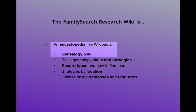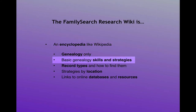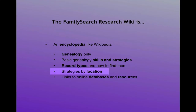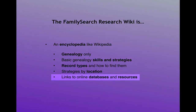The FamilySearch Research Wiki is an encyclopedia, just like Wikipedia, except that all of the articles are about genealogy. Here, you will learn basic genealogy skills and strategies. You will learn record types specific to Italy and strategies specific to Italy, and you will also find links to online databases for records in Italy.